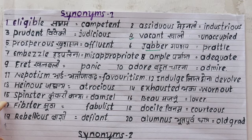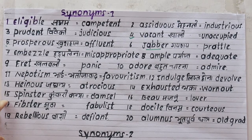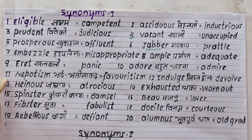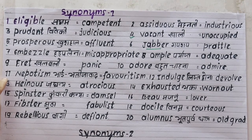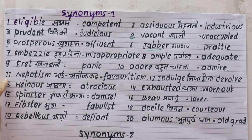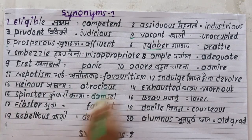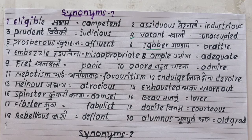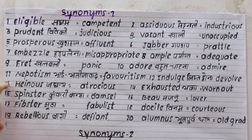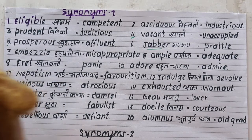Number eleven is 'nepotism', which is very common — like in Bollywood, favouring family members. The synonym is 'favoritism'. For example: there should be no nepotism or favoritism. Number twelve is 'indolent', meaning lazy.